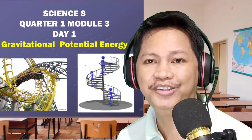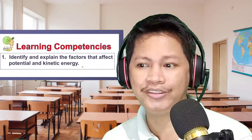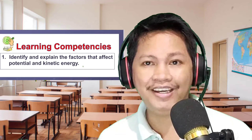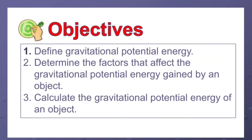As usual in every vlog, I'll begin with the reading of the learning competencies. For this lesson, the learning competencies are: identify and explain the factors that affect potential and kinetic energy. The objectives are: number one, define gravitational potential energy; number two, determine the factors that affect the gravitational potential energy gained by an object; and number three, calculate the gravitational potential energy of an object.